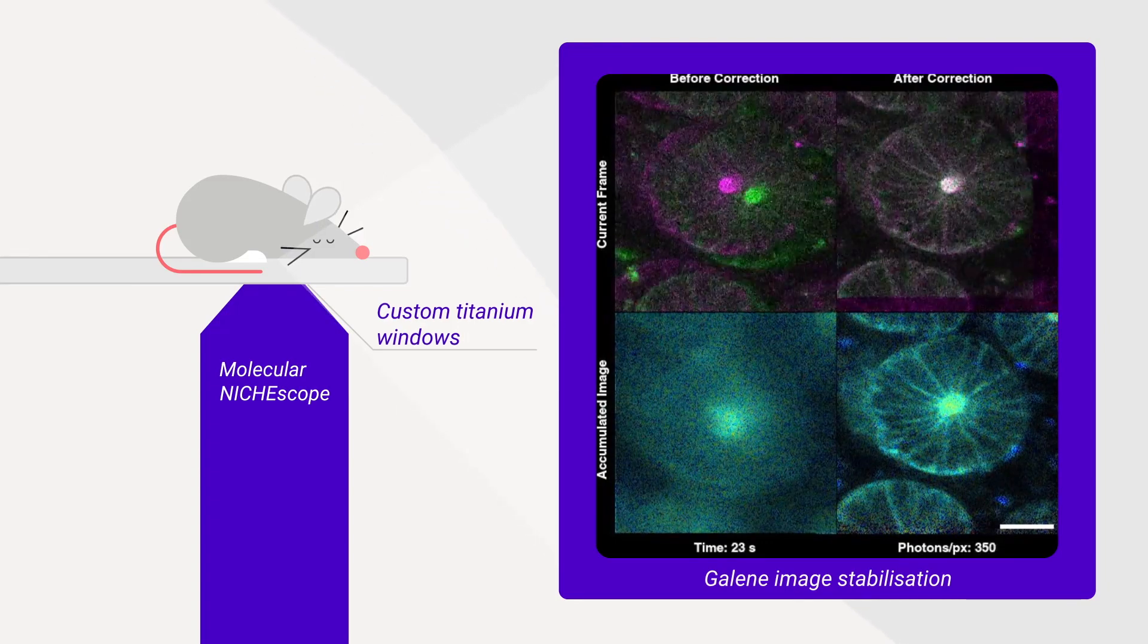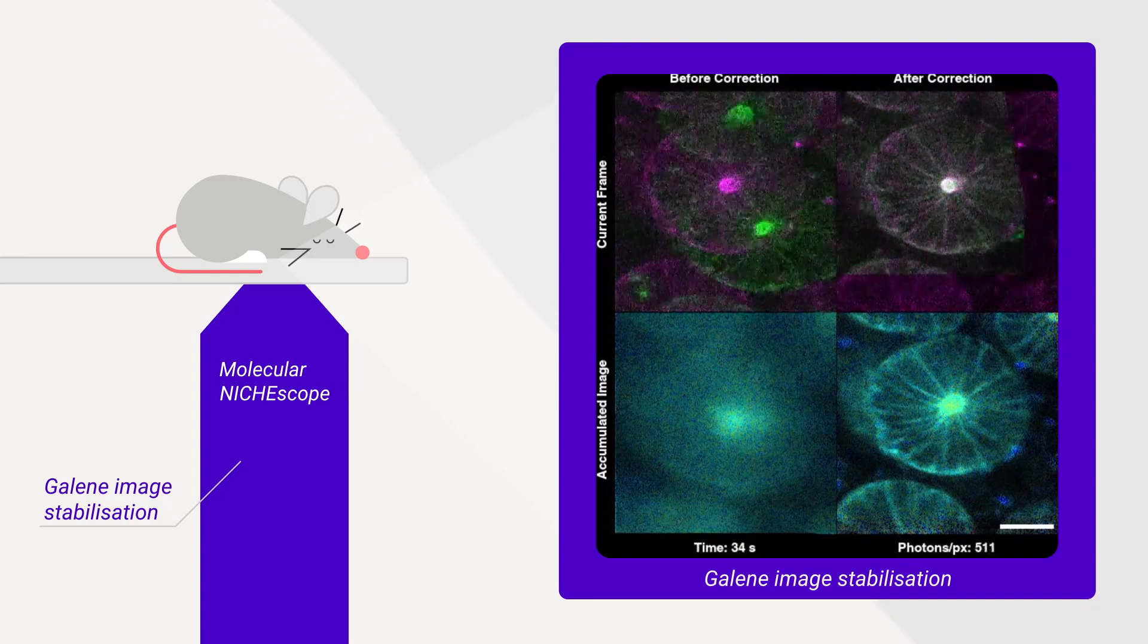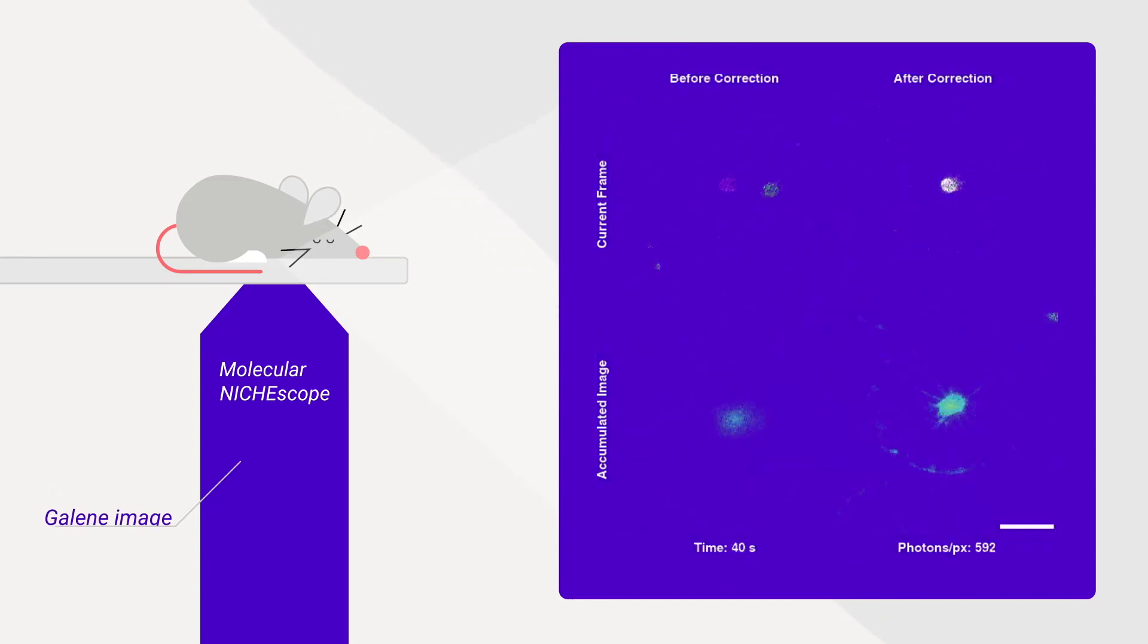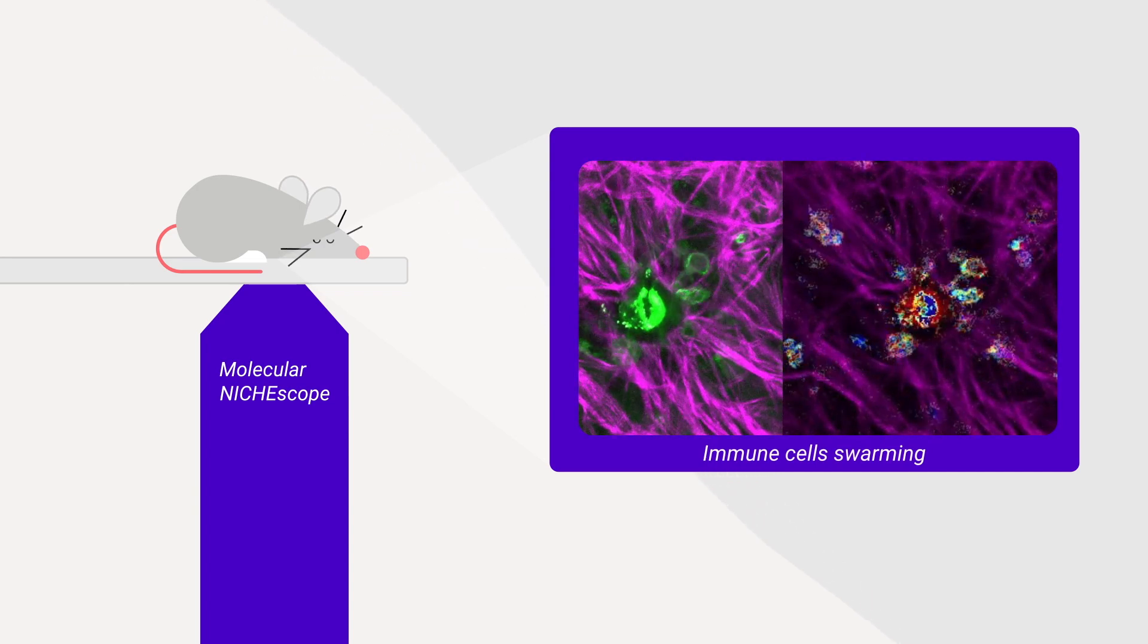We can even look in the lung. We have our in-house software, Gilean, which can actually stabilize the image and allow us to look where we couldn't look before, especially in the immune system where interactions are so rapid.